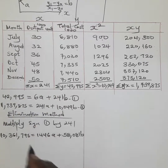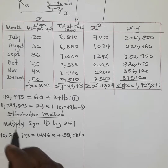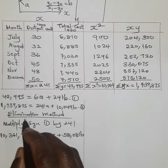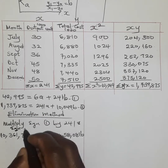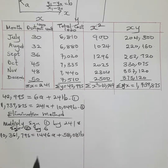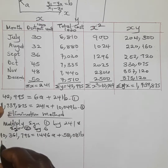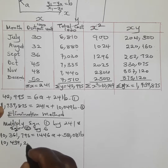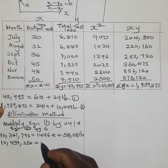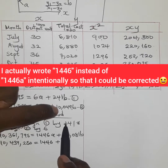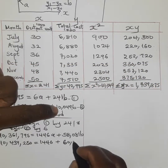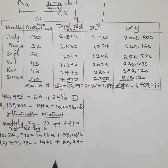Multiplying equation two by 6: 1,739,875 × 6 = 10,439,250, giving us 10,439,250 = 1446a + 60,294b.